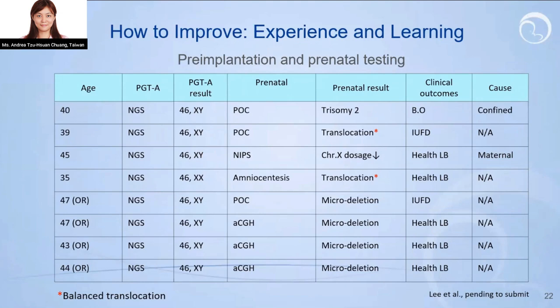The next example is must-to-know information. One patient asked: if I already took PGTA, do I need additional prenatal testing to check the chromosome status of my baby? This is very important. We continuously recorded prenatal results in our PGTA patients and found eight cases out of more than 2,600 PGTA cycles displaying inconsistent results. We informed our clinicians that inconsistency between pre-implantation and prenatal testing exists, but not at a high rate — a good reference for monitoring the entire pregnancy process.